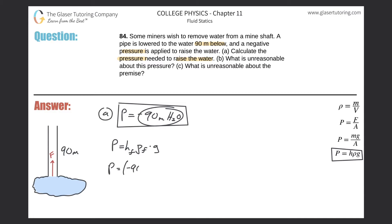It's negative 90 meters, the density of water we're assuming is fresh water, that's 1000, and gravity is 9.8. So we're going to get a negative answer: negative 90 times 1000 times 9.8, and we get a value of about negative 8.82 times 10 to the fifth pascal.